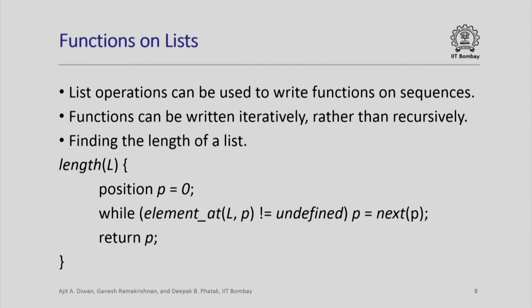For example, finding the length of a list: we define a variable called position whose value is 0 — remember, positions are just numbers. While there exists an element in list l at position p, we set p equal to next(p). That is, while there is an element at position p we keep incrementing p until we reach a point where there is no element in list l at position p. element_at(l, p) will be undefined when p equals the length of the list, and so we return p. This is the length function.